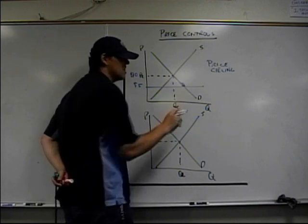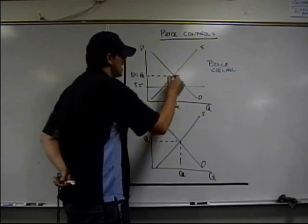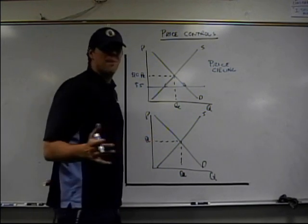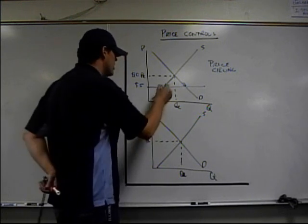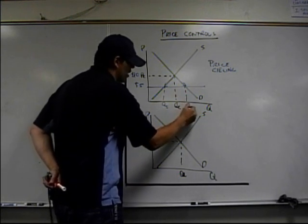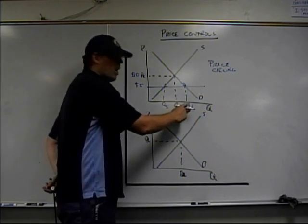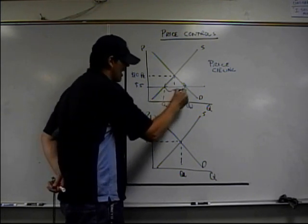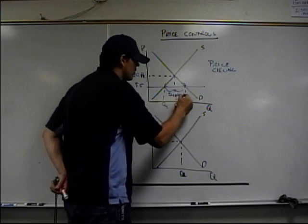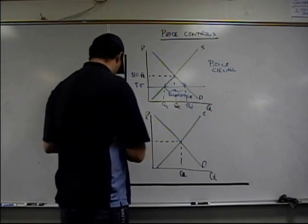The end result of this price ceiling is now the price is down. When price is down, consumers are like, yeah, I want to buy more of them. And producers at a low price, they don't want to produce very many of them. So this is the quantity supplied. The quantity demanded is way over here. We are at disequilibrium. There's more quantity that people want than the quantity producers are making. We have a shortage. The result of a price ceiling is a shortage.